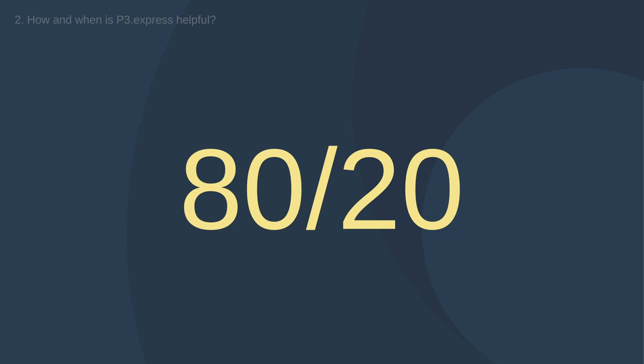For life-critical or very large projects, P3 Express is not really designed to cover those, though even for those projects using P3 Express is better than nothing. When it comes to project size it's mainly about the number of people working in the project, but also the diversity of skills and how people work together. For example, a construction project with 500 people is medium size and fine for P3 Express, but an IT development project with 500 people is really big and complex.